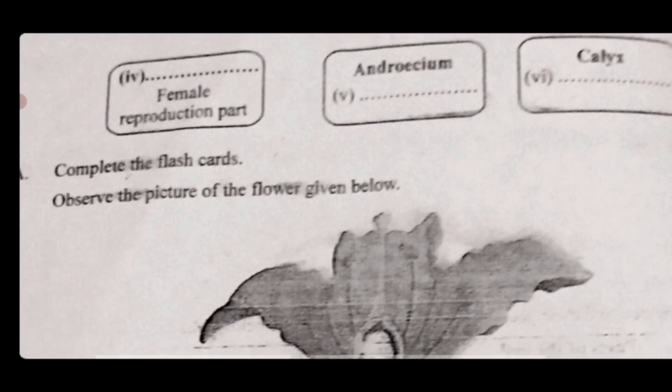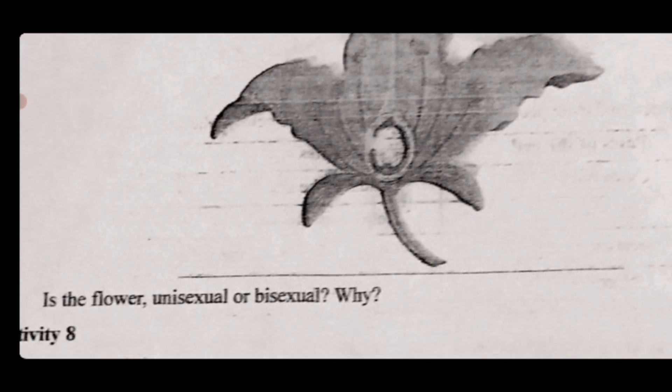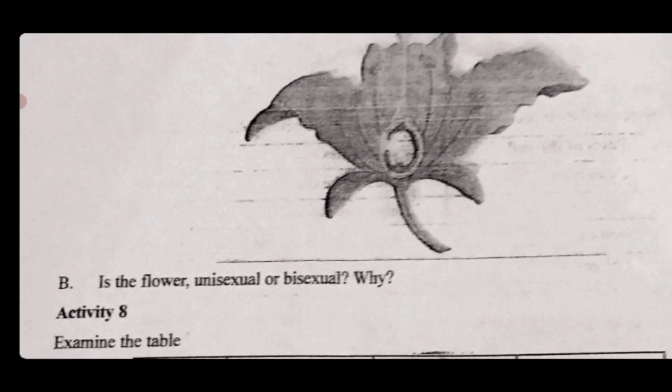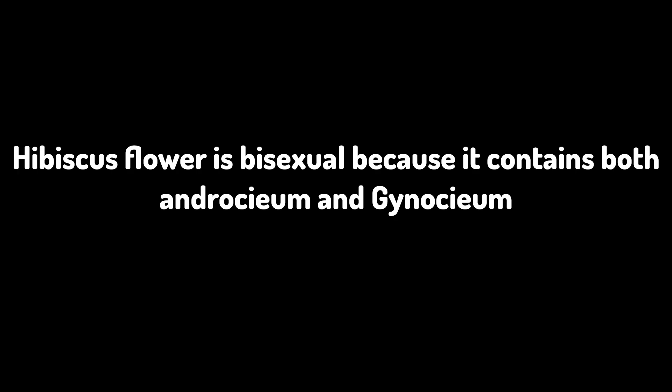The last flashcard: the sepal protects the flower when it is a bud and holds the petals after it blooms. Observe the picture of the Hibiscus flower given below. Is this flower unisexual or bisexual? Hibiscus flower is bisexual because it contains both Androecium and Gynoecium — that is, both the male and female organs. So it is a bisexual flower.